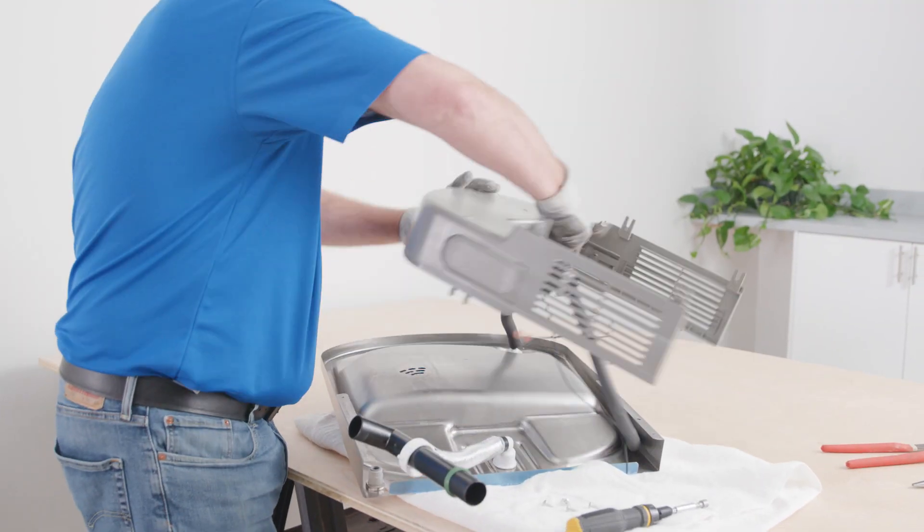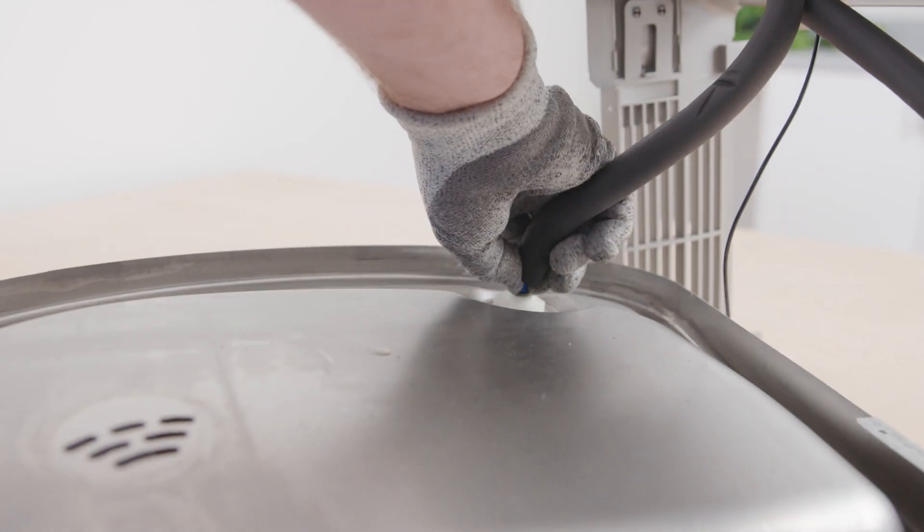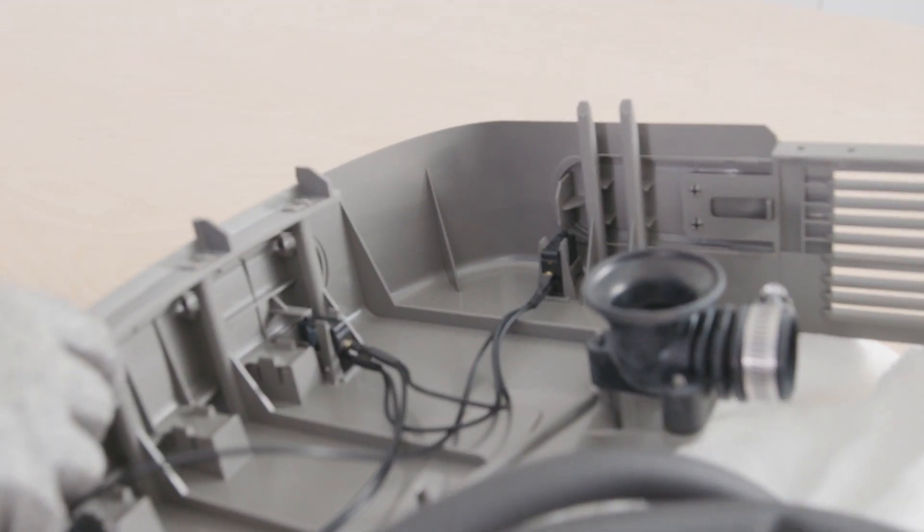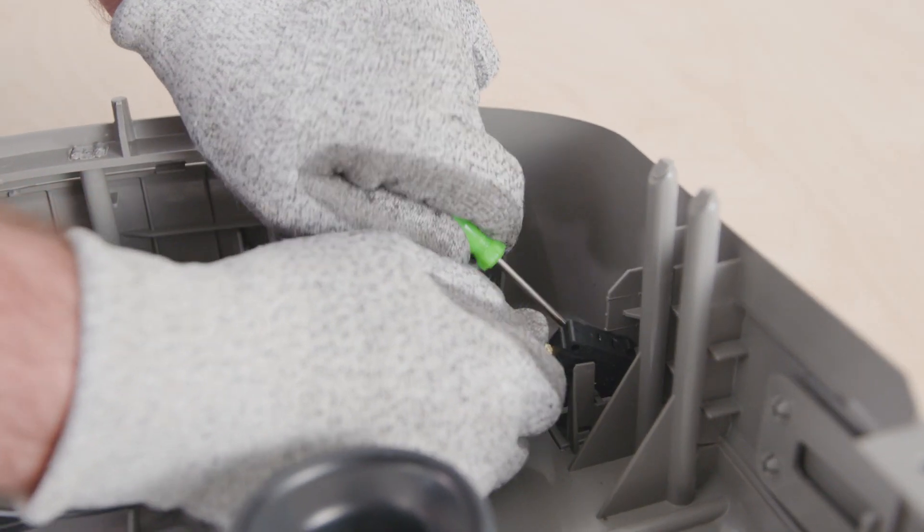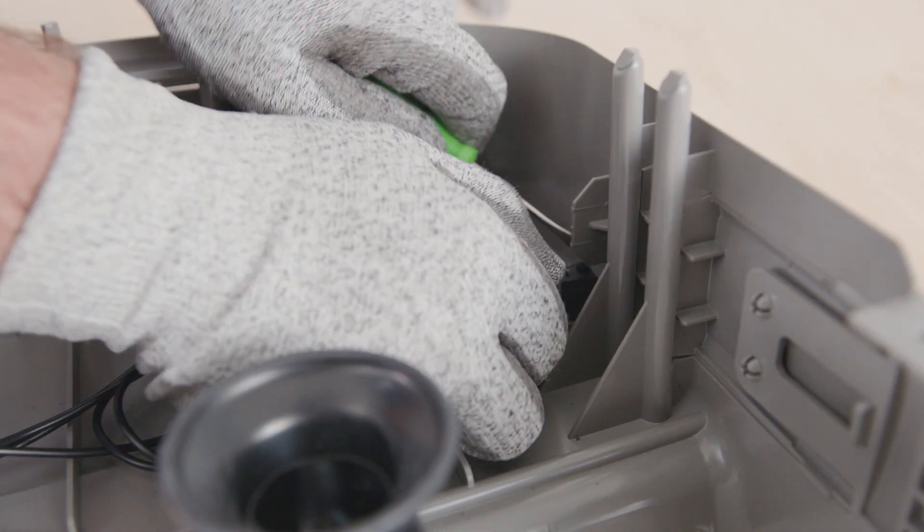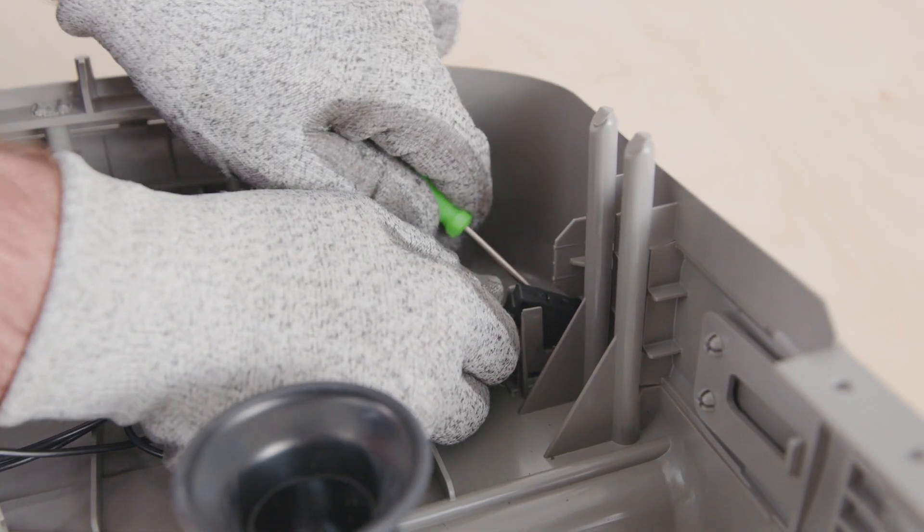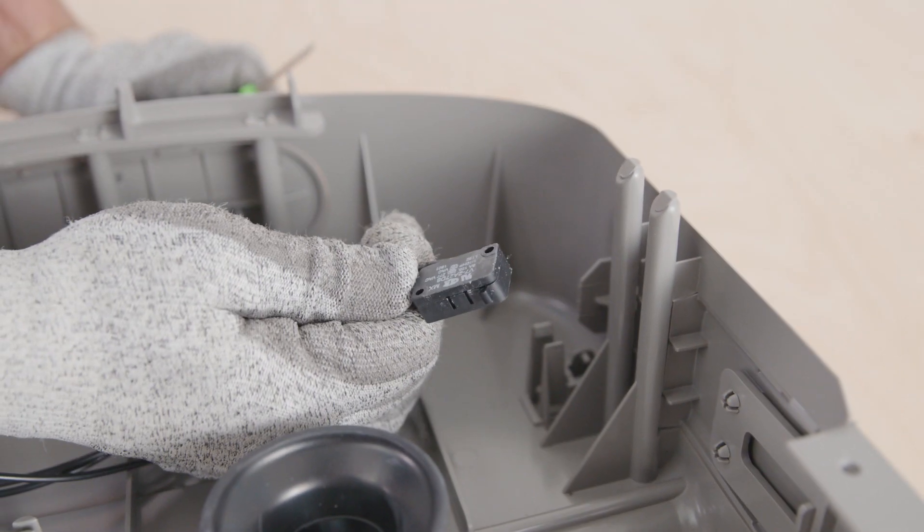Turn the shroud over to access the micro switches. Use a small screwdriver and your thumb to pry open the micro switch catches. Pivot the back of the switch, the part with the wires connected, upward. Then use the screwdriver to push the back of the switch off the pivot post.